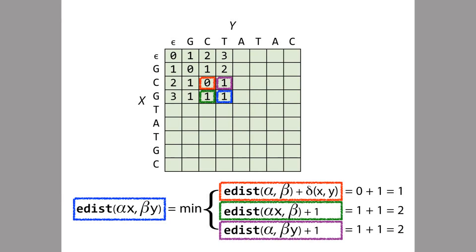That's how we fill in the cells, except for the first row and first column. Those correspond to the edit distance between the empty string and some other string, which always equals the length of the other string. So we initialize the first column with ascending integers 0, 1, 2, 3, 4, 5, and so on, and the same for the first row: 0, 1, 2, 3, 4, 5, etc.